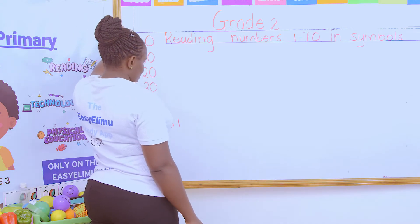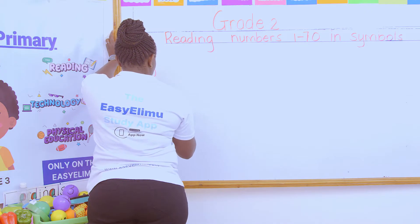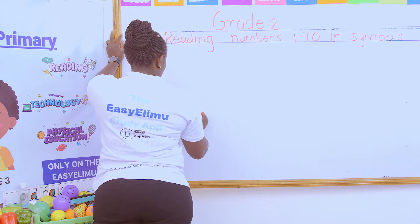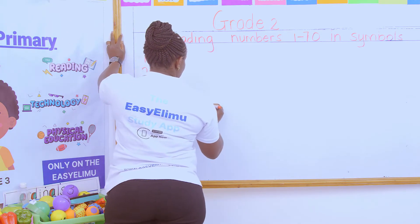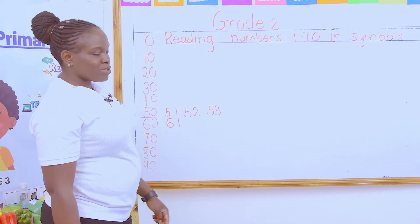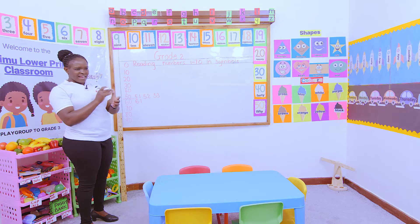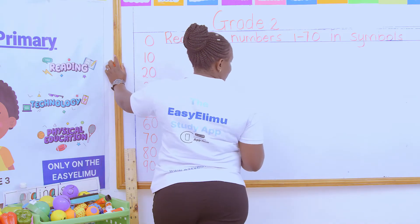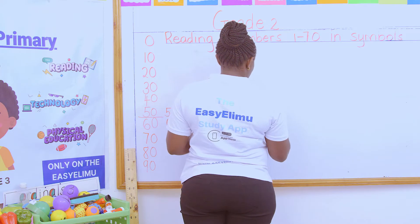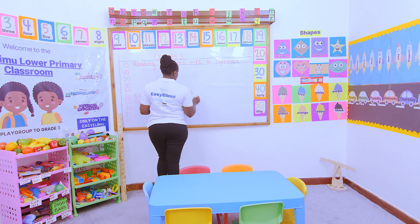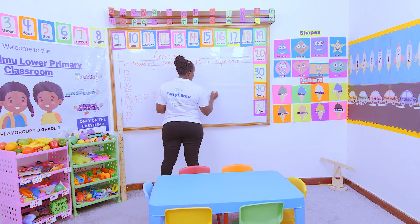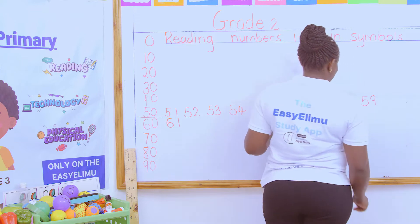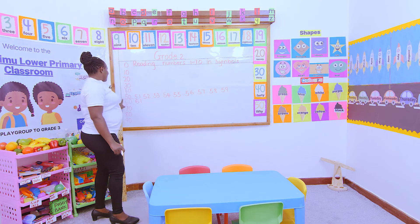If I add 50 plus one, I'm going to get 51. What about 50 plus two? 52! Very good. And 50 plus three? 53. One student even wrote all the numbers up to 100 during the holiday — well done! So we get 54, then 55, 56, 57, 58, 59.